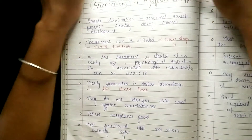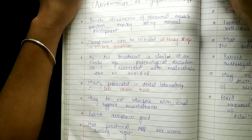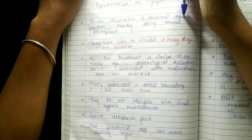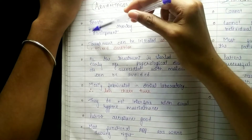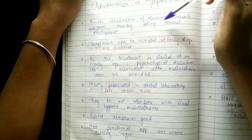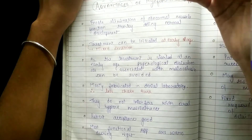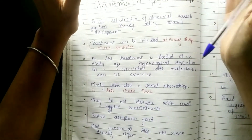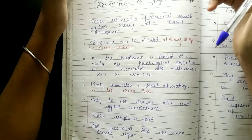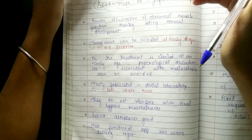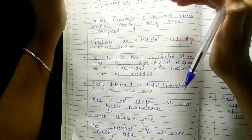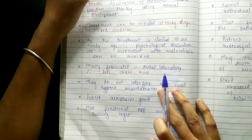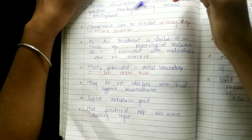Now, advantages and disadvantages of myofunctional appliances. First we are going to look at advantages. First of all, it enables elimination of abnormal muscle function, thereby aiding normal development. So if your tooth has been displaced, myofunctional appliances help guide teeth through their normal development. Abnormal muscle function is eliminated basically.